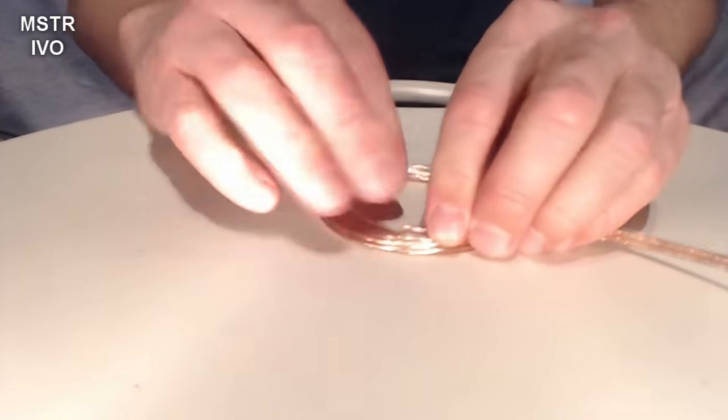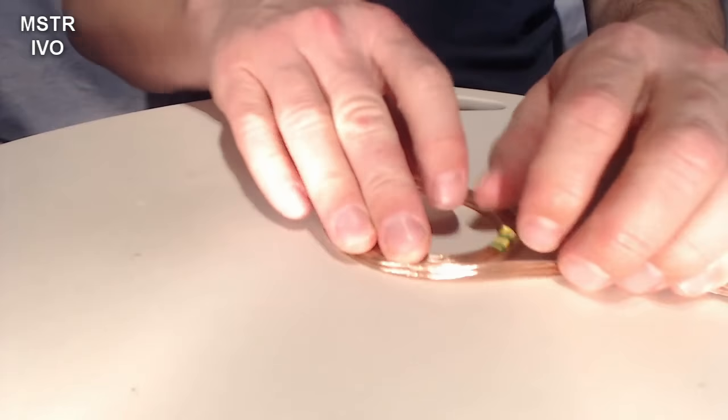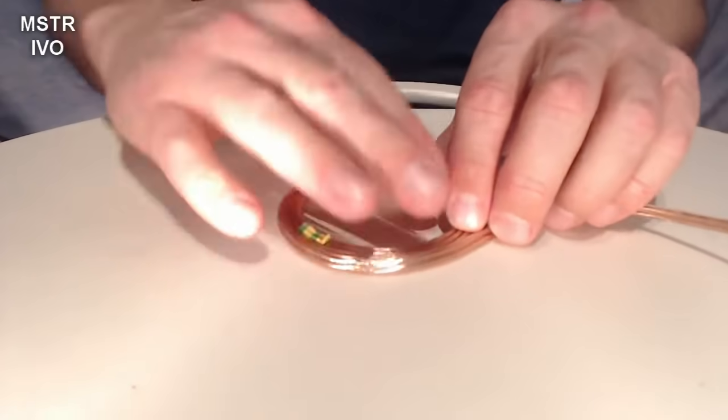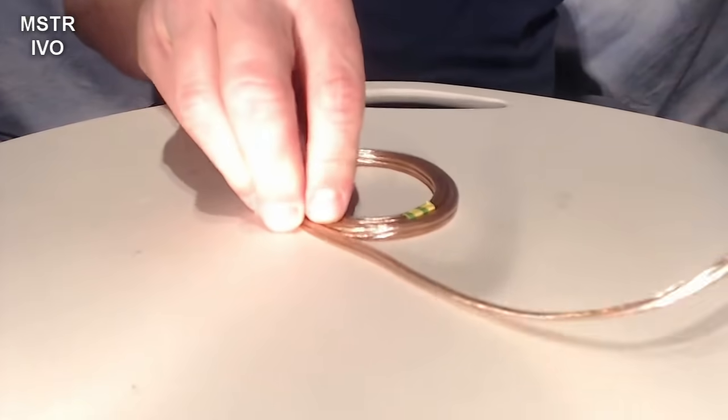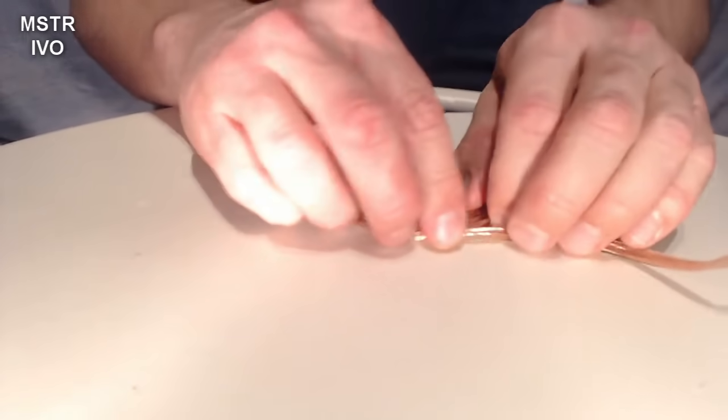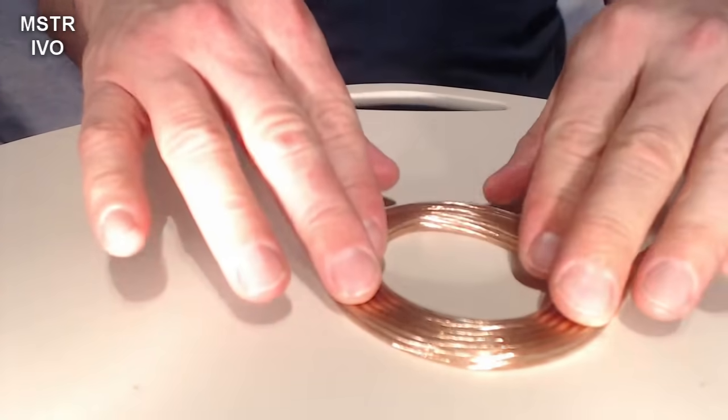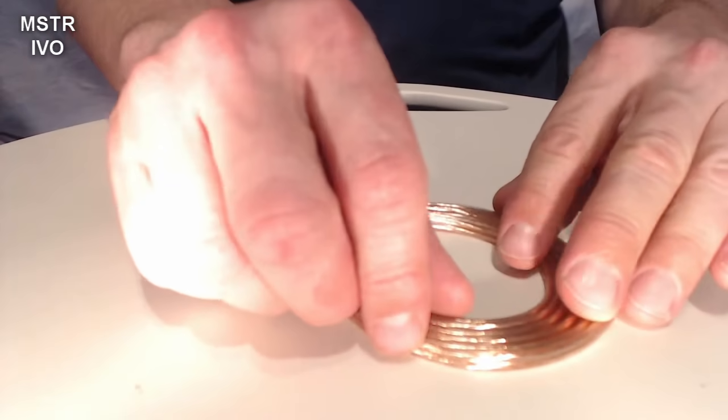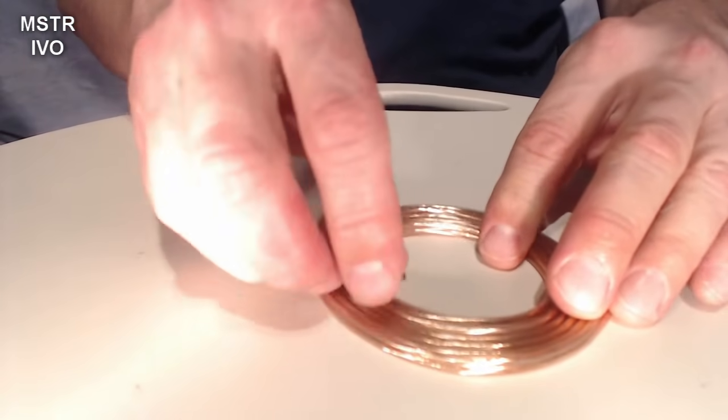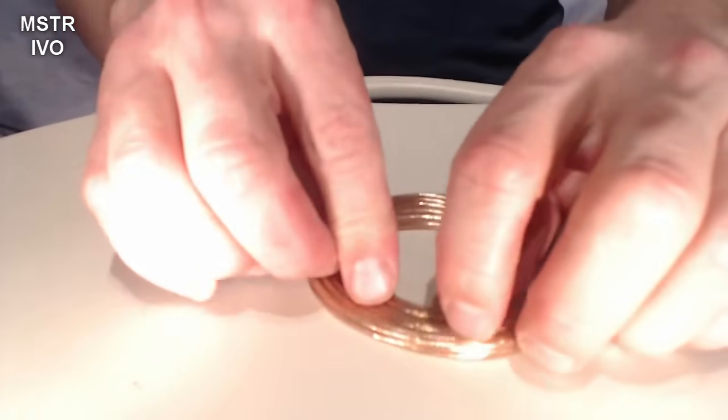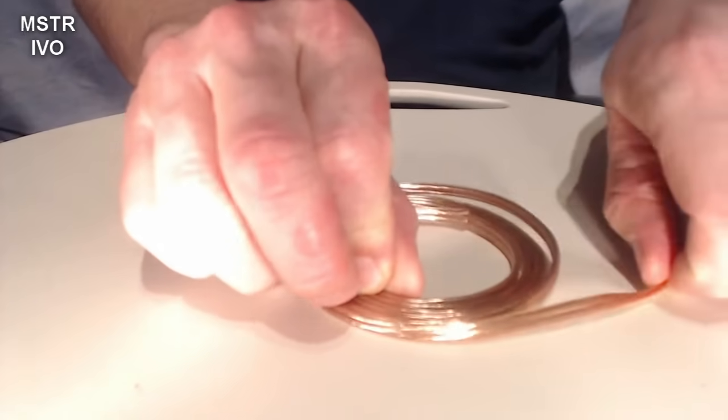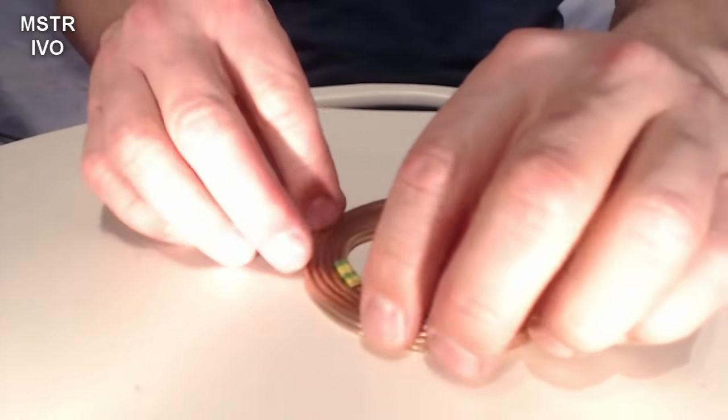And this way you get a bifiler coil. Really easy, really fast and totally not hard. Every once in a while I like to tighten up the coil. So all the windings are really snugly fit together. And then I'll use a little bit of hot glue.